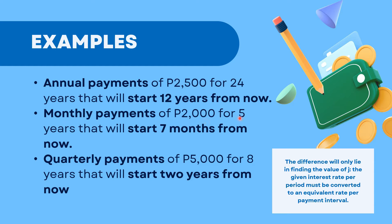Next: monthly payments of 2,000 pesos for 5 years that will start 7 months from now. Since payments are monthly, that's 12 times a year. For 5 years, you have 5 times 12 which is 60 actual payments. But since it's a Deferred Annuity, you won't start paying until 7 months from now. So you'll start on the 7th month, meaning the period of deferral is from the first month until the 6th month.